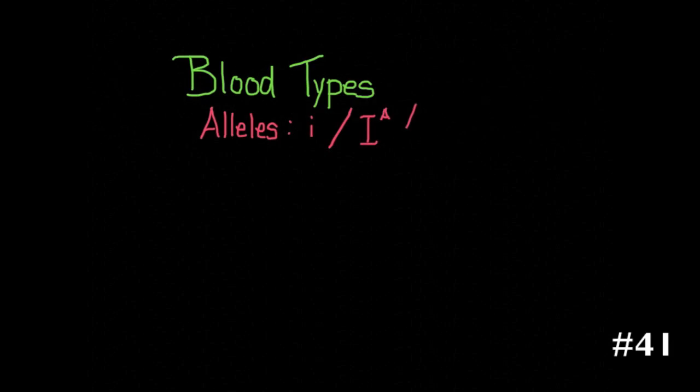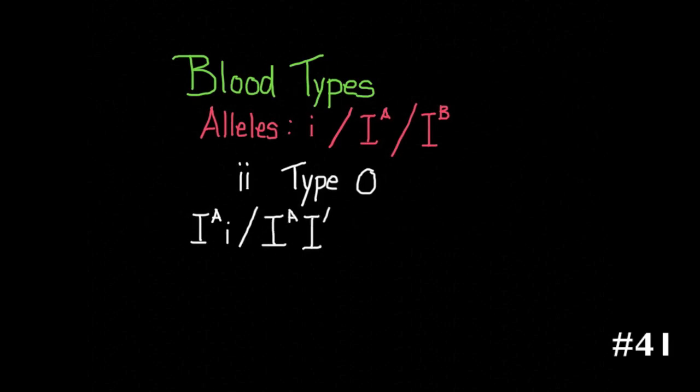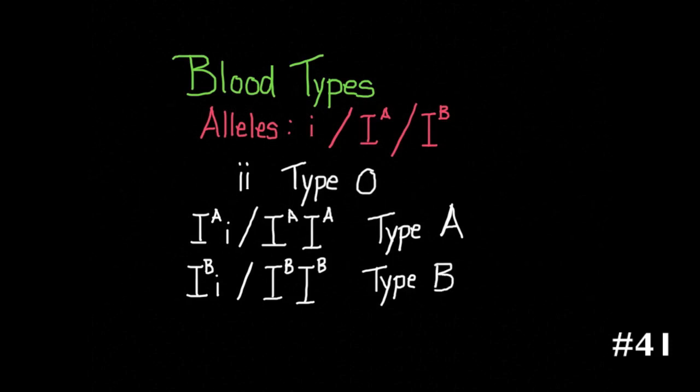When writing the genotypes for blood types, you have to be familiar with the notation that the IB is asking you to use. A mistake in the past is using the incorrect notation. So lowercase i, lowercase i is type O. Type A can either be uppercase i, A and lowercase i, or uppercase i, A, uppercase i, A. Similarly for type B, and for type AB you have uppercase i, A, uppercase i, B.